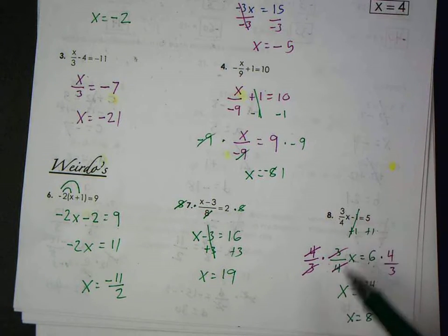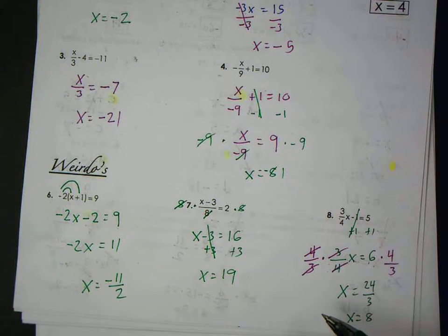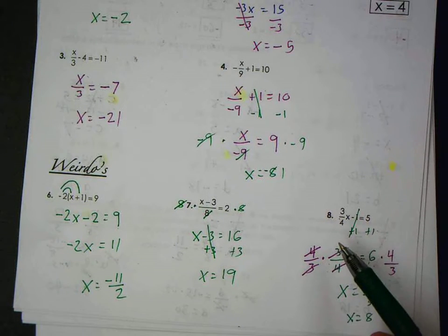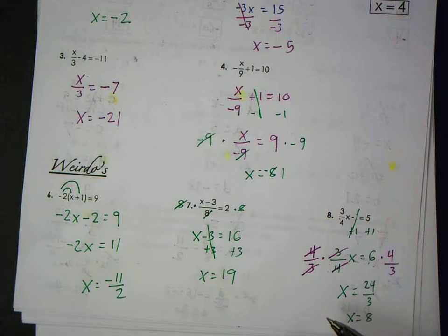You have a fraction, this is like six over one. When you multiply fractions, you multiply numerators and denominators. Six times four is twenty-four, one times three is three. Twenty-four divided by three is eight. So three-fourths of eight: two, four, six, eight. That's how I could break eight into fourths. Three of those would be six. So three-fourths of eight is six. Six minus one is five. Any questions on this so far?